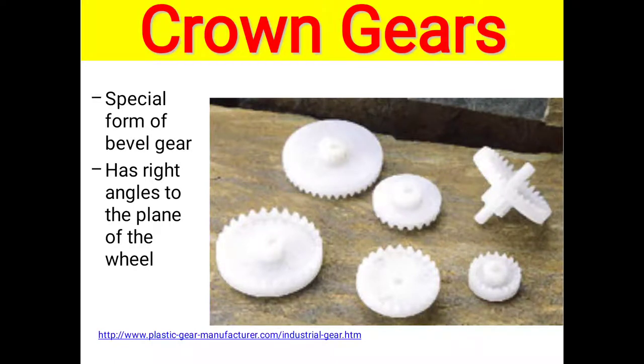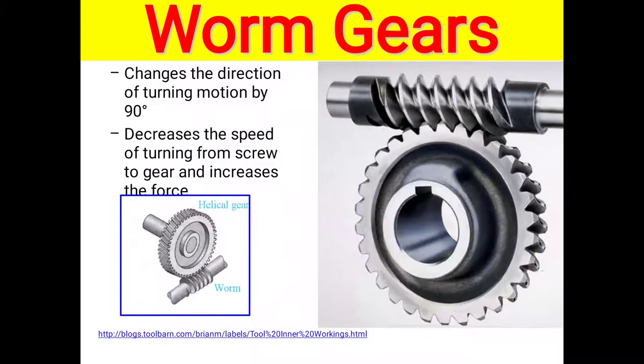Worm gear changes the direction of turning motion by 90 degrees, decreases the speed of turning from screw to gear, and increases the force. Here are two images: first is helical gear, second is worm gear. The connection and meshing of these gears creates the worm gear. Here is the actual working of worm gear during speed transmission.